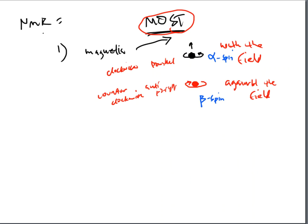I just want you to understand that this is not simple - it is somewhat more complicated than how we're describing it, but that's not our intention with these lecture videos. So let's talk about what's so special with the alpha and the beta spin states.